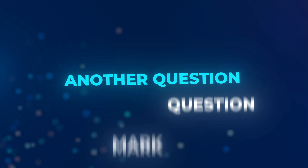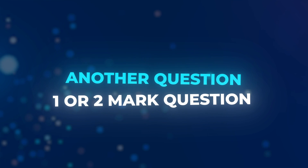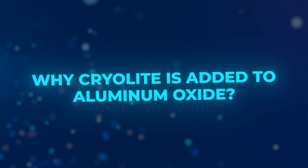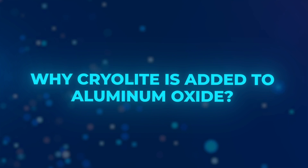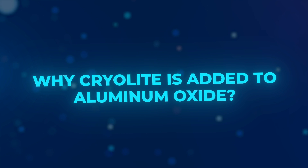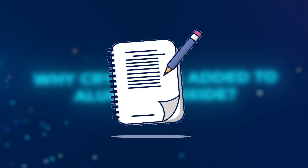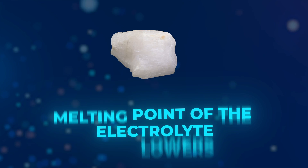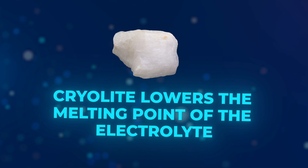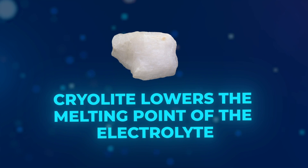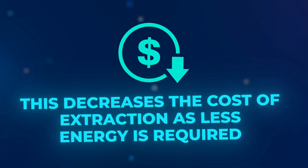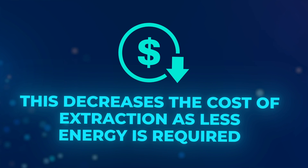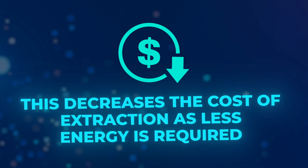Another question that could come up as a one or two mark question is asking you why cryolite is added to aluminium oxide. Assuming this is a two mark question, the first mark I would put is that cryolite lowers the melting point of the electrolyte, and secondly, this decreases the cost of extraction as less energy is required.